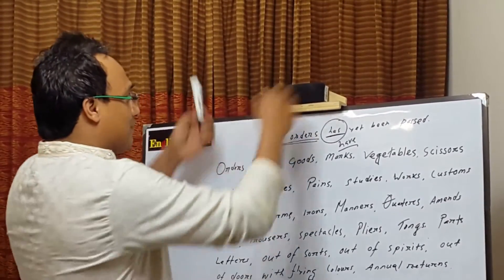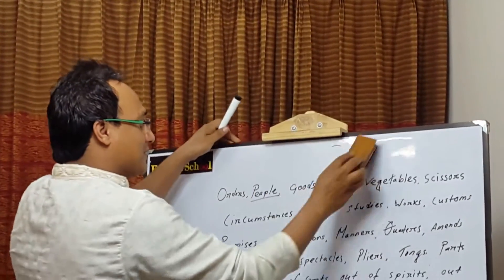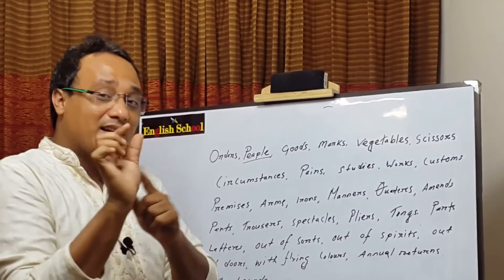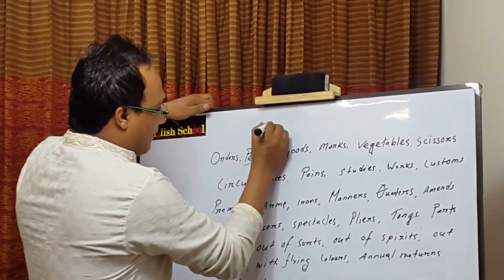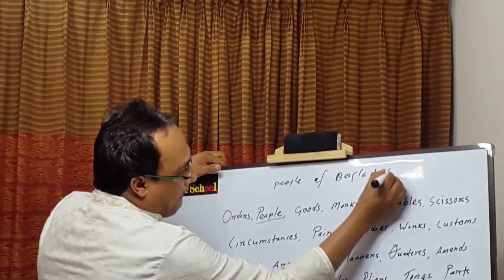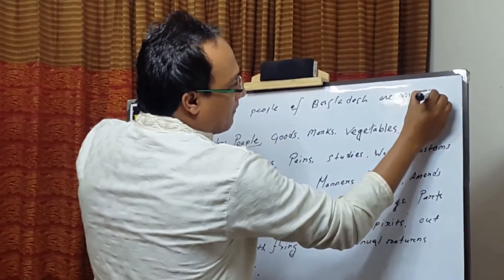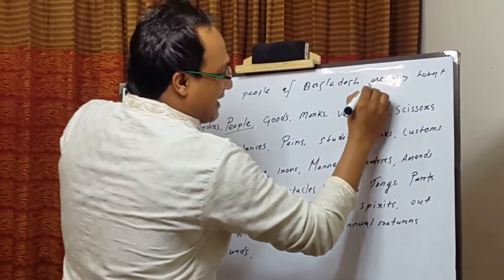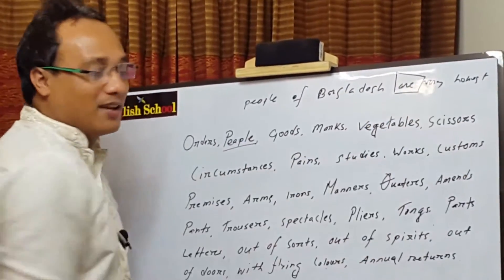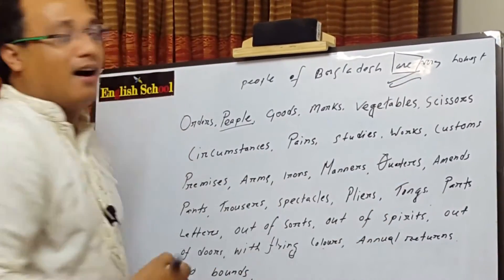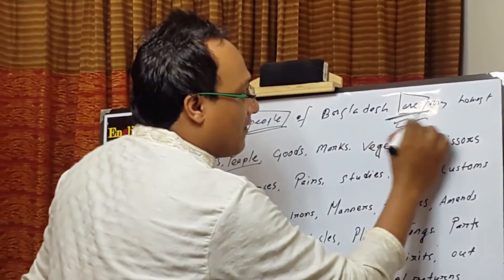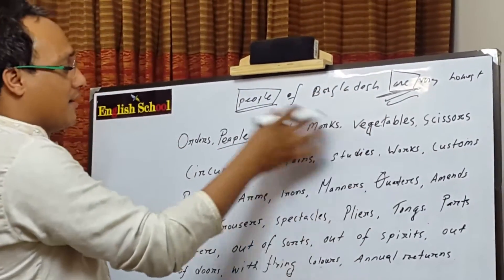Next is 'people.' We are saying 'People of Bangladesh is very honest,' using 'is' — but that is wrong. We have to use 'are,' because 'people' is a plural noun. Instead of 'is,' we have to use 'are.' So the right English is: 'People of Bangladesh are very honest.'